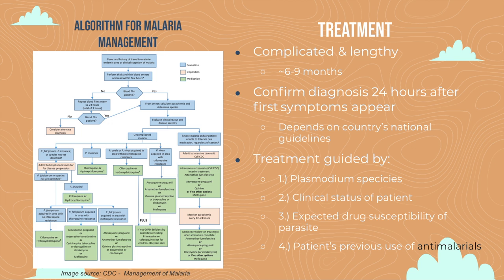Malaria should be treated within 24 hours after the first symptoms appear before it becomes serious and life-threatening. Treatment of a patient with malaria depends on the country's national guidelines, which consider several aspects. Each patient goes through an algorithm guided by the infecting Plasmodium species, clinical status of the patient, the expected drug susceptibility of the parasite, and the patient's previous use of malaria drugs. General treatment involves a combination of antimalarial drugs depending on the specific case.